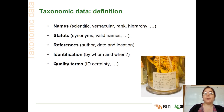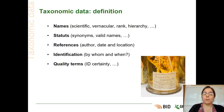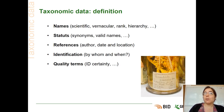So what do you do when you have some taxonomic data? First of all, what are taxonomic data? We talked already about the different origins of data and taxonomic data. It can be names — scientific names, vernacular names, ranks, hierarchy.